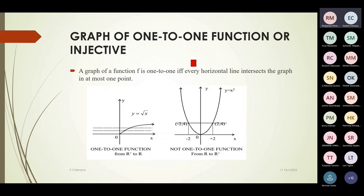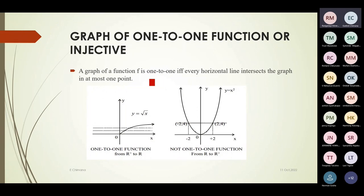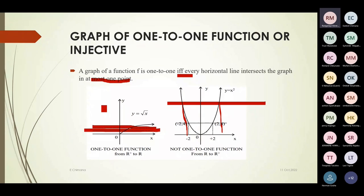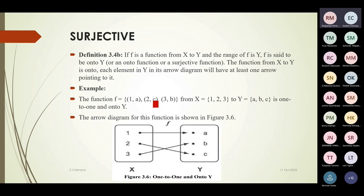For the graph of a one-to-one function: a graph is one-to-one if and only if every horizontal line intersects the graph at most one point. For example, the graph of y = x² is not one-to-one since a horizontal line cuts it at two points. A proper one-to-one function graph will have every horizontal line crossing it at most once.